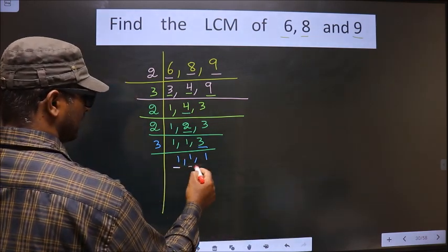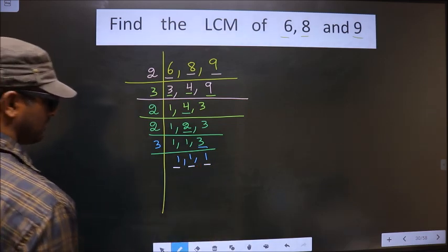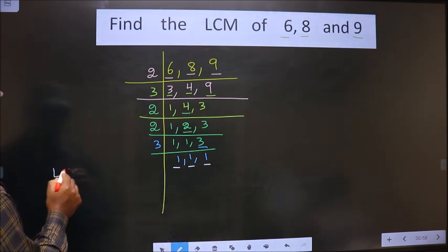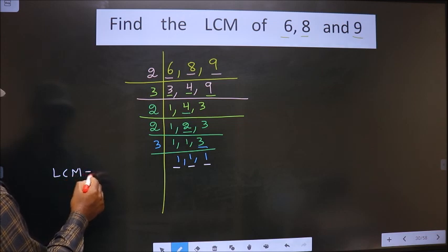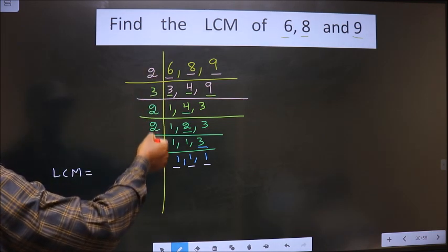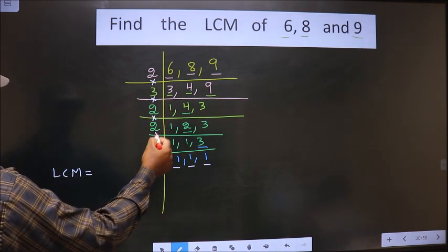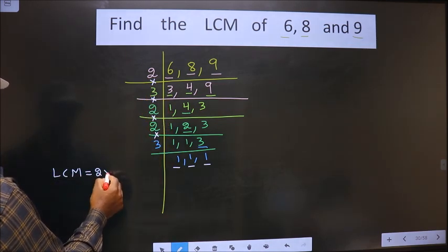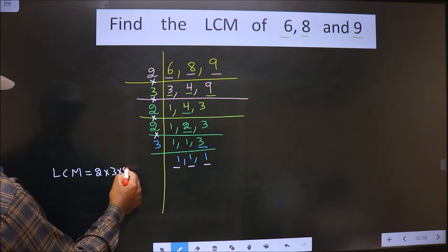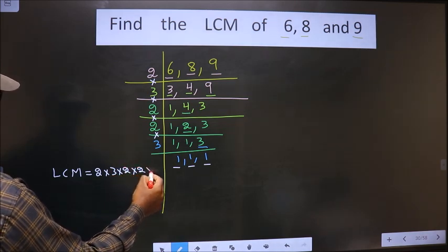Now we got 1 in all the 3 places. So now our LCM is the product of these numbers that is 2 into 3 into 2 into 2 into 2 into 3.